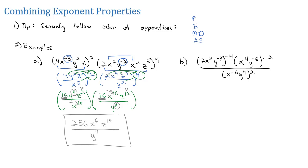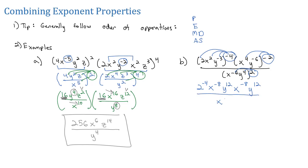Remember I said we generally follow order of operations — there's a little flexibility with that. Here I could simplify inside the parentheses and move those negative exponents, but then I'd have to make a little fraction for each set. So rather than doing that, let's jump right to the exponent step and move the negative 4, negative 2, and positive 2 onto each of their factors. So we get 2 to the negative 4th, x to the negative 8, y to the 12th, x to the negative 8, y to the positive 12, over x to the negative 12, y to the 8th.